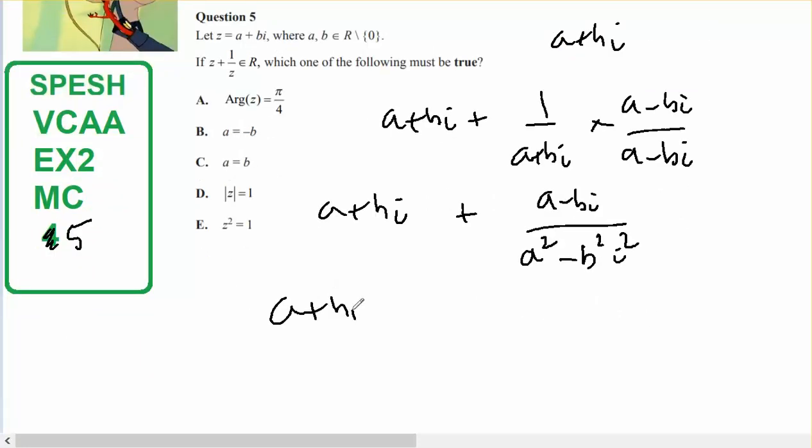Which is a + bi + a/(a²+b²) - bi/(a²+b²).